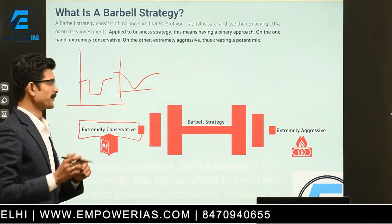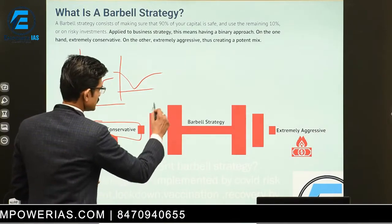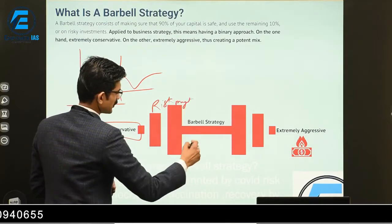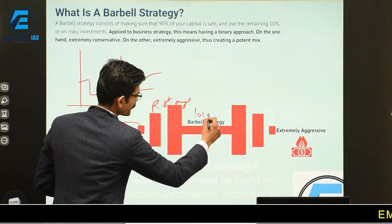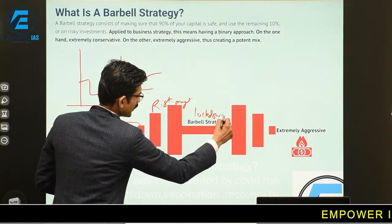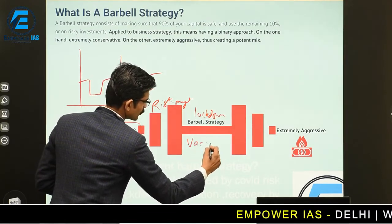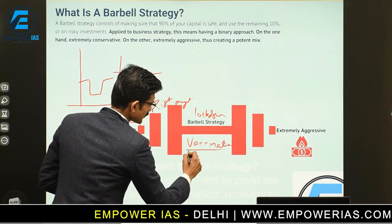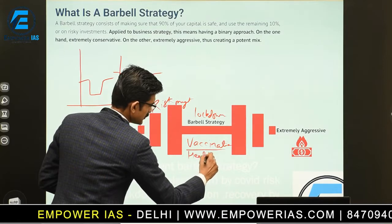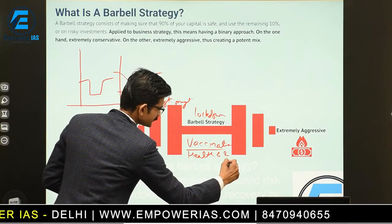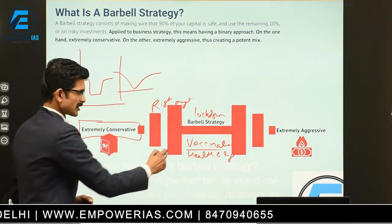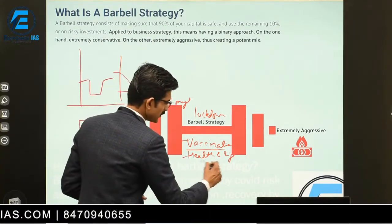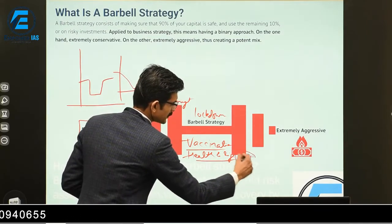There was a declining economy but the government tried to manage the risk — that is risk management — by putting the lockdown, creating a vaccination in order to protect the population for better health and security of life. The government started vaccination for health and life, and it also provided direct benefit transfer (DBT) into the accounts of the people.